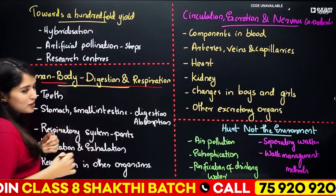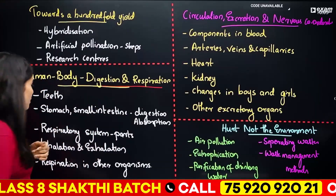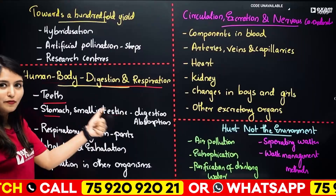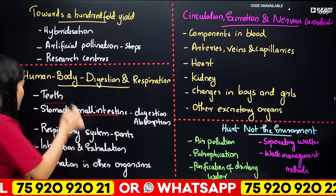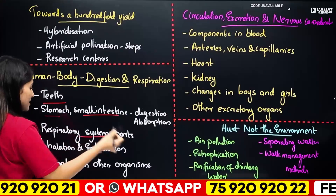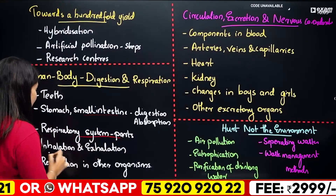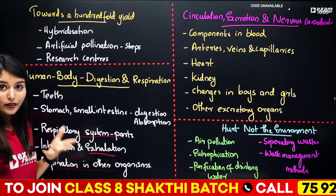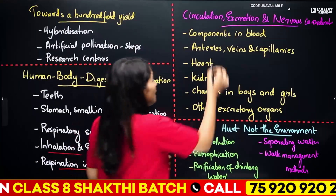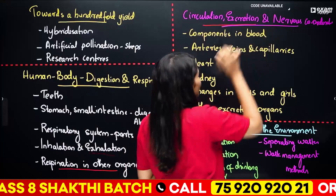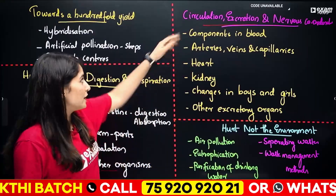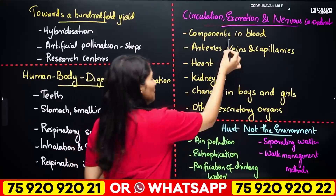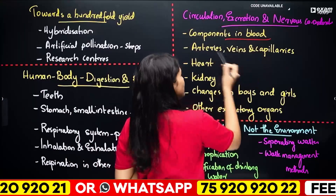Human Body — Digestion and Respiration: in this chapter — teeth, stomach, small intestine, digestion, absorption, respiratory system, parts, inhalation and exhalation.